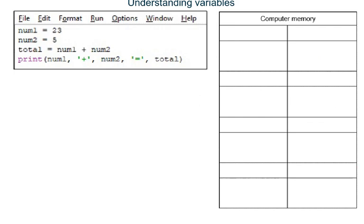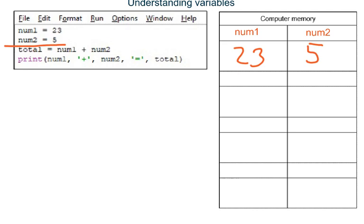This program again creates a variable named num1 and assigns to it the integer 23, then creates a variable named num2 and assigns to it the integer 5. Line 3 creates a variable named total and assigns to it the result of adding together what has been stored in variables num1 and num2.